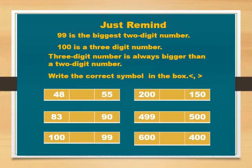Just a reminder: 99 is the biggest 2-digit number. 100 is a 3-digit number. A 3-digit number is always bigger than a 2-digit number.